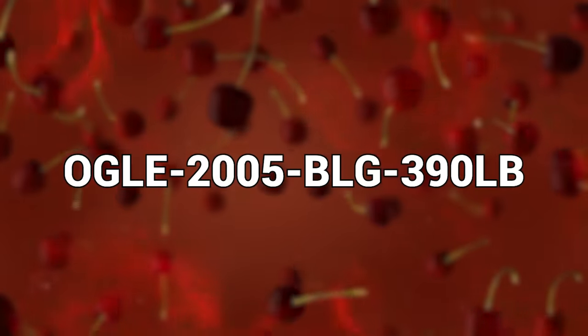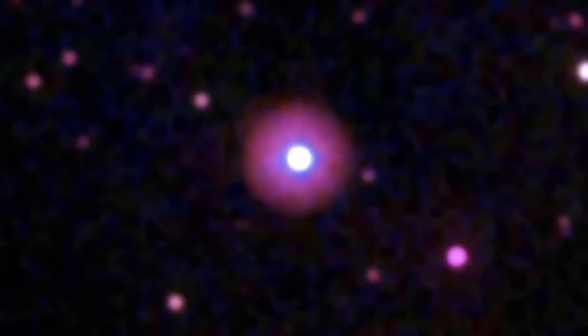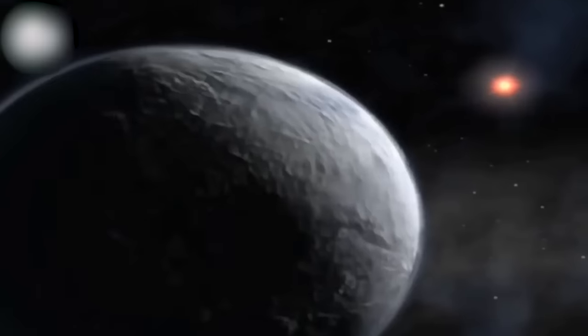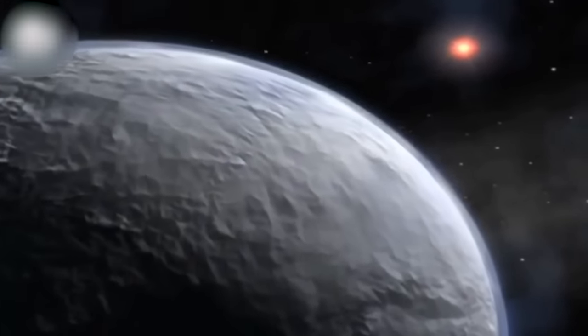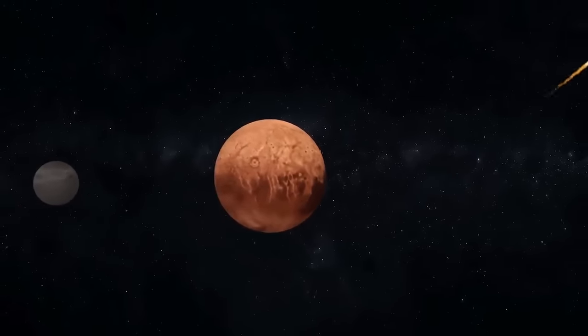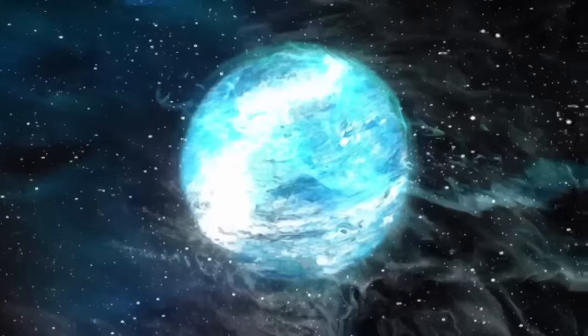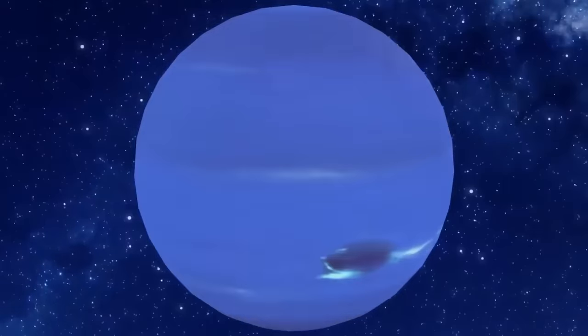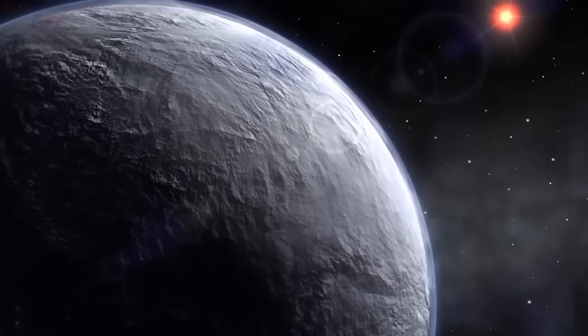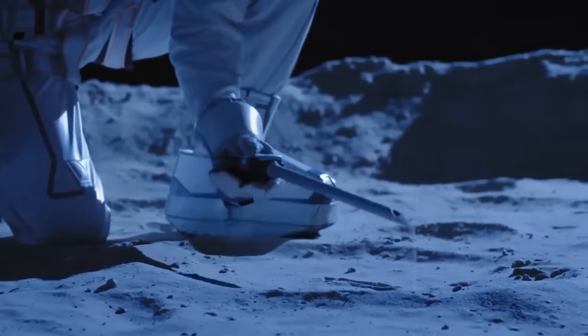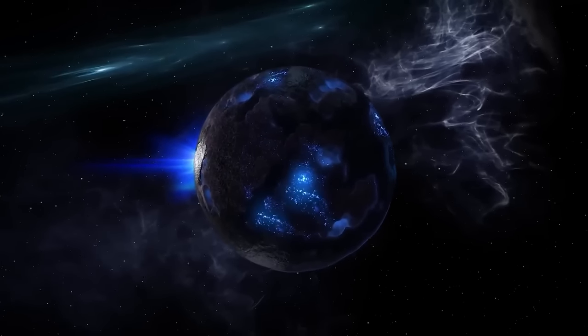Augle 2005 BLG 390LB - Seriously, who names these planets these things? Regardless of the crappy title though, this planet deserves to be on the list because it's a frozen wasteland of a planet. One that if you were to go there, you would likely be frozen nearly instantly. The planet is so far from the sun that its temperature is a whopping negative 220 degrees Celsius. There's no life happening on the surface. However, some scientists think that the core of the planet could actually be warm enough that the layers surrounding it could support life.